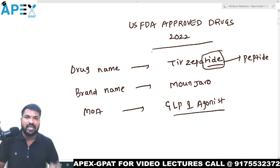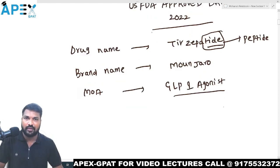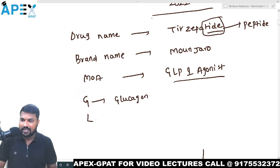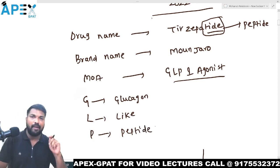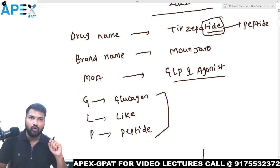What do you mean by GLP-1? GLP-1 stands for: G means glucagon, L means like, P means peptide — glucagon-like peptide-1. That is what GLP-1 is.